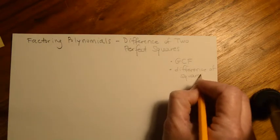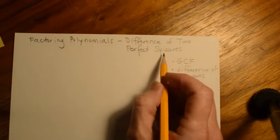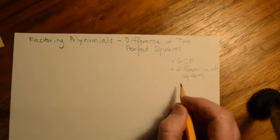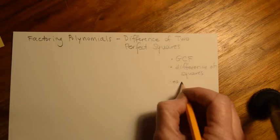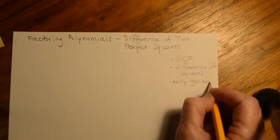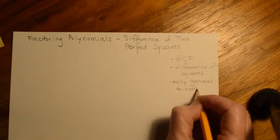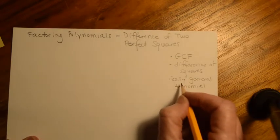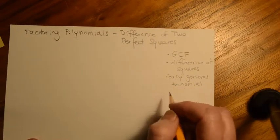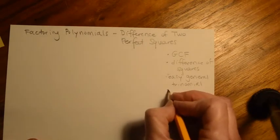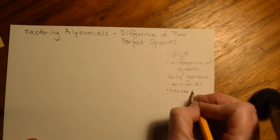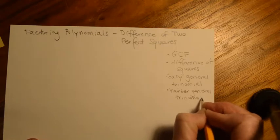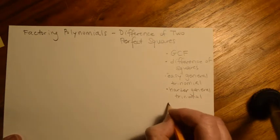We usually call it Difference of Squares, but its full name is Difference of Two Perfect Squares — that's the name it gets called when it's in trouble, and this is what we usually call it. The third type was Easy General Trinomial. I'm going to put quotes around 'Easy' because it's all relative. Then Harder Trinomial — I'm not putting quotes around that because everybody pretty much agrees those are harder. And then the last one is Grouping.